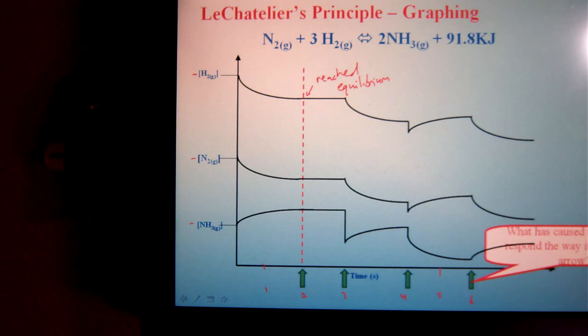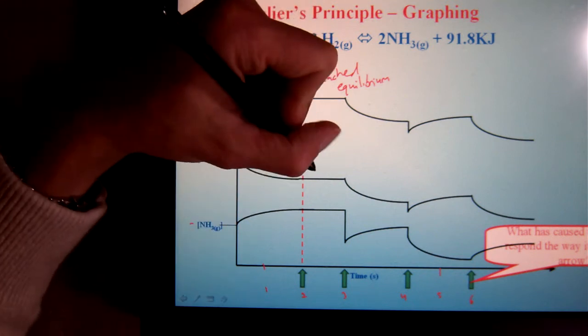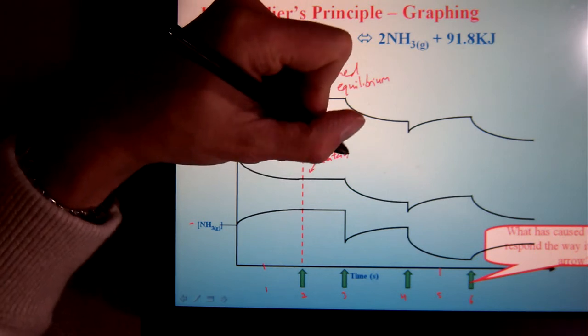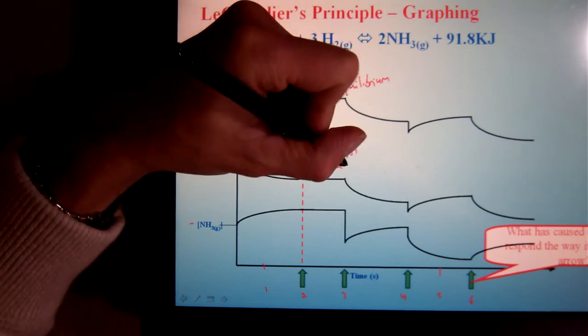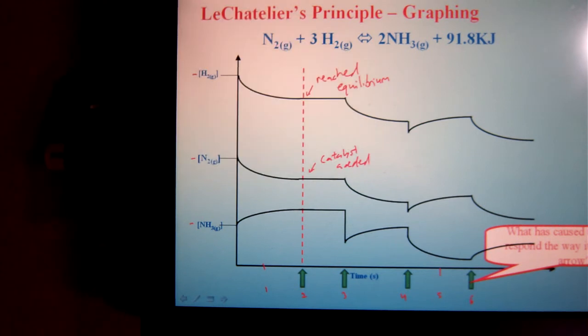Now if you saw flat lines later on in a graph, you could also say maybe a catalyst has been added. Again that's only if you see this further down the graph. All right, let's look at another one.